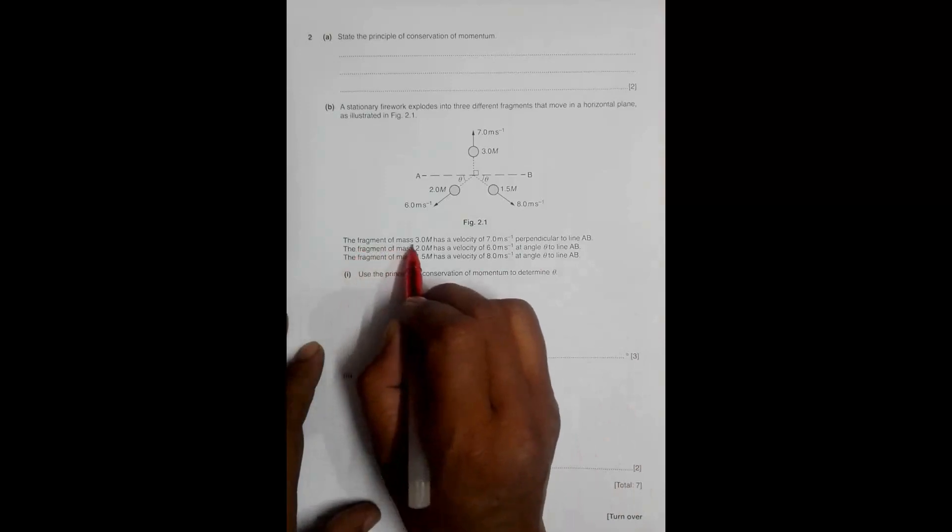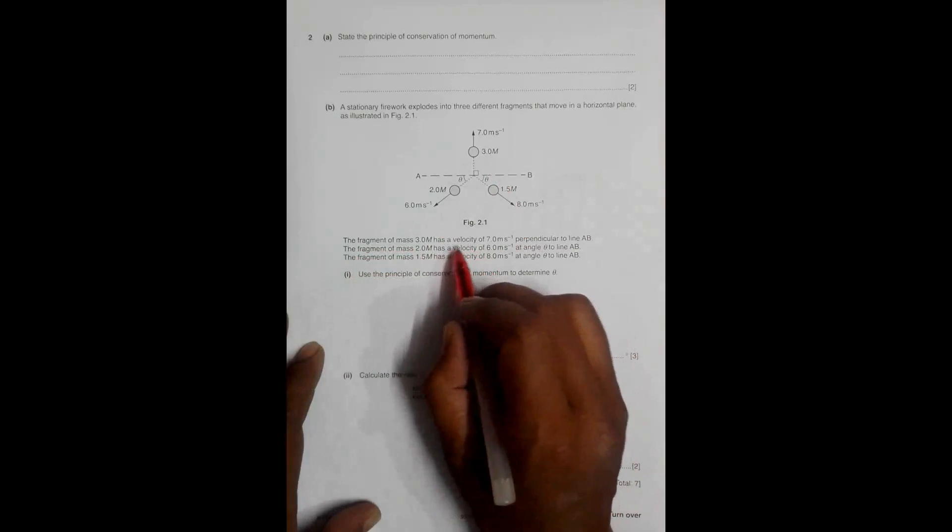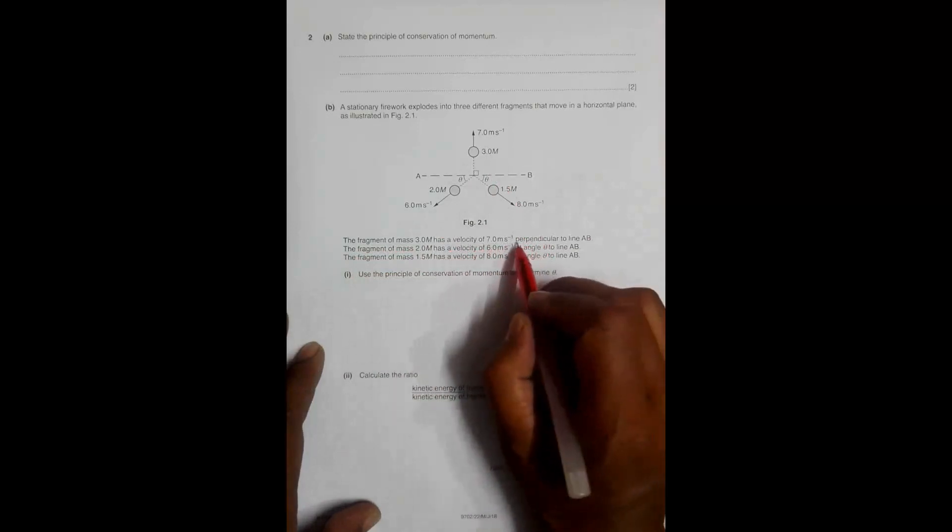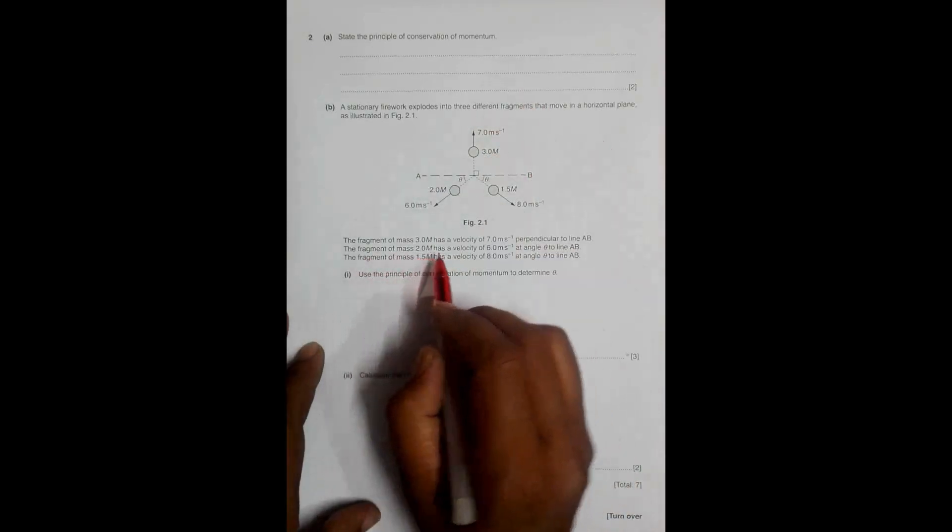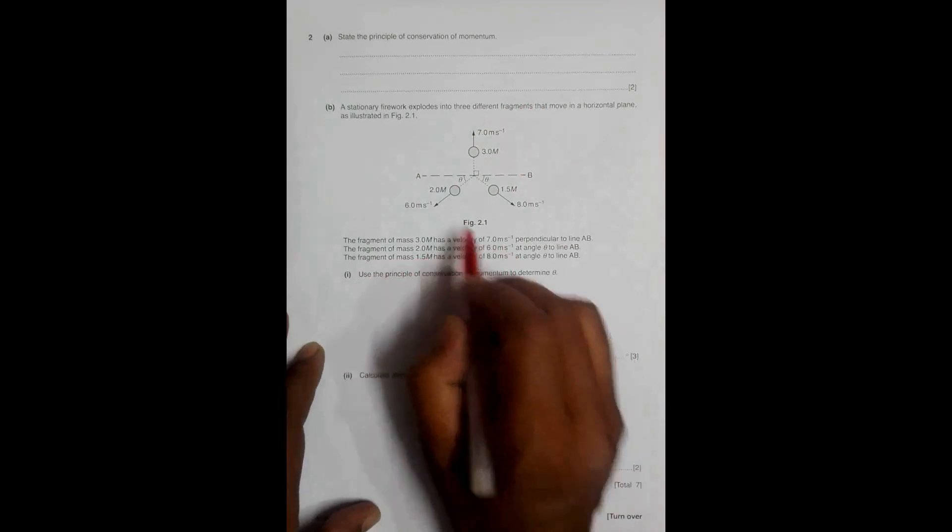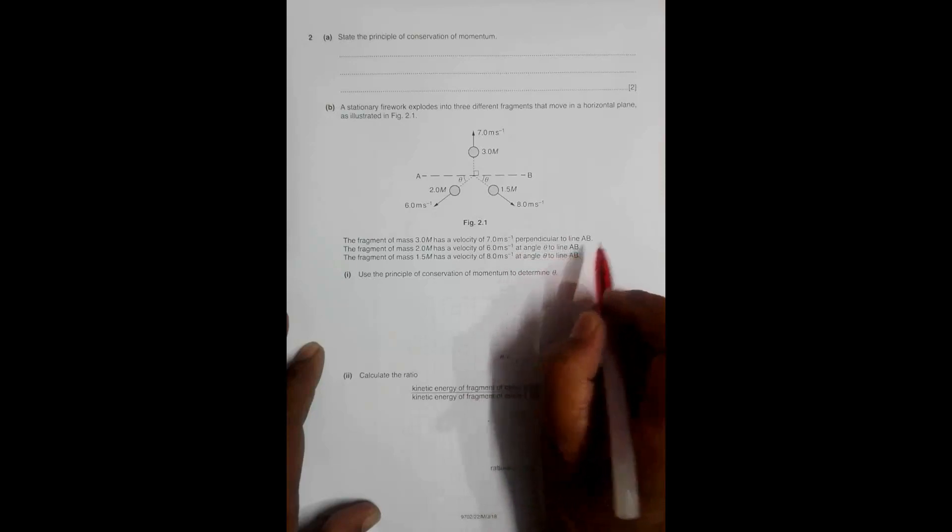In figure 2.1, the fragment of mass 3.0m has a velocity of 7 meters per second perpendicular to line AB. The fragment of mass 2.0m has a velocity of 6.0 meters per second at angle theta to line AB.